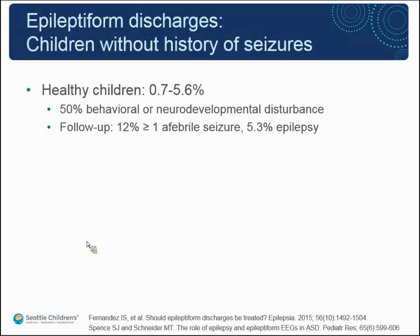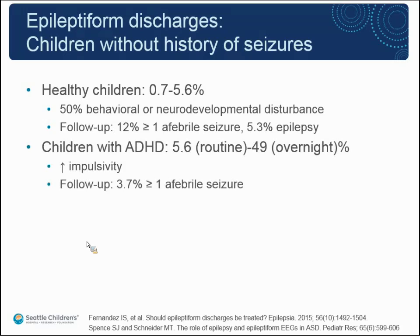What about interictal discharges and development? In healthy children, about 0.7% to 5% will have bona fide epileptiform discharges. Fifty percent of those children will have behavioral or neurodevelopmental disturbances. In follow-up, about 12% will have at least one afebrile seizure and 5% will develop epilepsy. In children with ADHD, depending on whether a routine or overnight study is used, anywhere from 5% to 49% show epileptiform discharges, and those with more discharges seem to have increased impulsivity. About 3% of ADHD children with epileptiform abnormalities had at least one afebrile seizure — less than the healthy children group, interestingly.